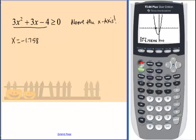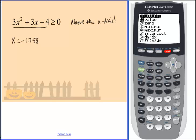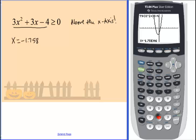Then hit that second and trace key again and choose to go to the other side. Again, we're looking for the zero. Start from the left-hand side of the zero, go to the right-hand side of the zero. Choose enter. And we get another value, which is x equals 0.758.